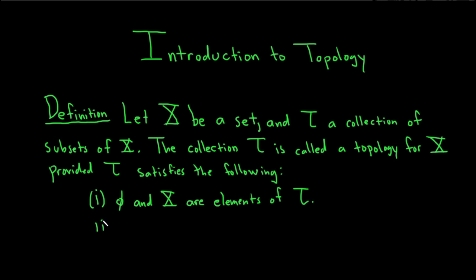The second condition is that if you have two elements in tau, the intersection of those elements is also in tau. Some textbooks and authors require a finite set, but you can easily show that will follow from our definition using mathematical induction, so let's just stick with two.